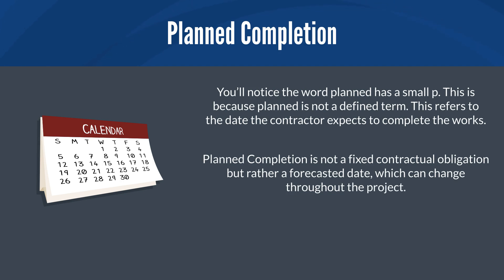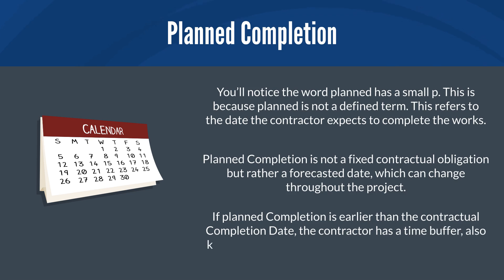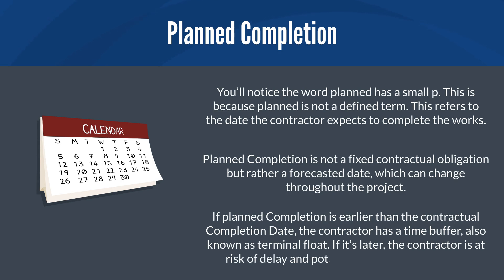The difference between planned completion and the completion date gives insight into the contractor's time risk. If planned completion is earlier than the contractual completion date, the contractor has a time buffer, also known as terminal float. If it's later, the contractor is at risk of delay and potential liability for damages.